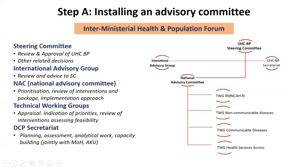Methods in each step are based on relevant theories and best practices from HTA bodies around the world. The first step was installation of an advisory committee. The DCP-3 secretariat conducted planning, assessment, analytical work, and capacity building jointly with the Ministry of Health and Agha Khan University. There were four technical working groups with more than 100 stakeholders in total from four clusters: reproductive, maternal, neonatal, and child health; adults and health and nutrition; non-communicable diseases; communicable diseases; and health services access. They prioritized interventions and provided recommendations to the National Advisory Committee, which sent its recommendation to the steering committee chaired by the Minister of Health. An International Advisory Group also advised, and the Inter-Ministerial Health and Population Forum approved the essential package of health services.